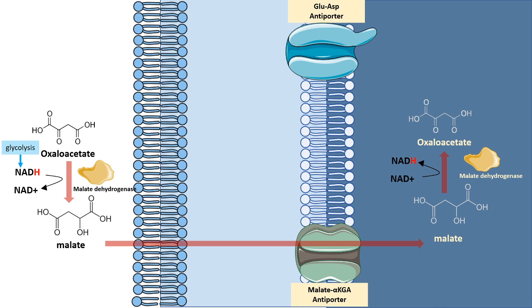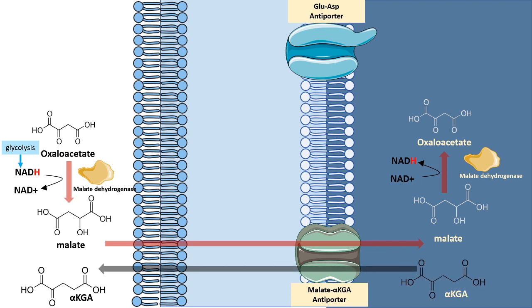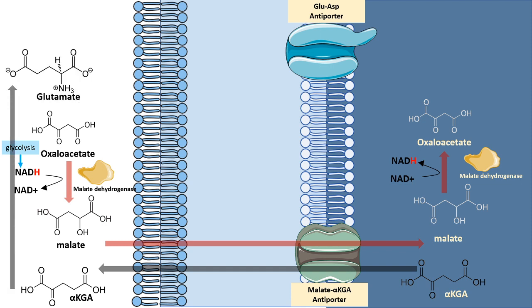The other component of the malate-alpha-ketoglutarate antiporter is alpha-ketoglutarate. Since it's an antiporter, alpha-ketoglutarate present in the mitochondrial matrix would be transported out to the cytosol. Alpha-ketoglutarate would eventually be converted into glutamate, and in the form of glutamate it can come back into the mitochondria.